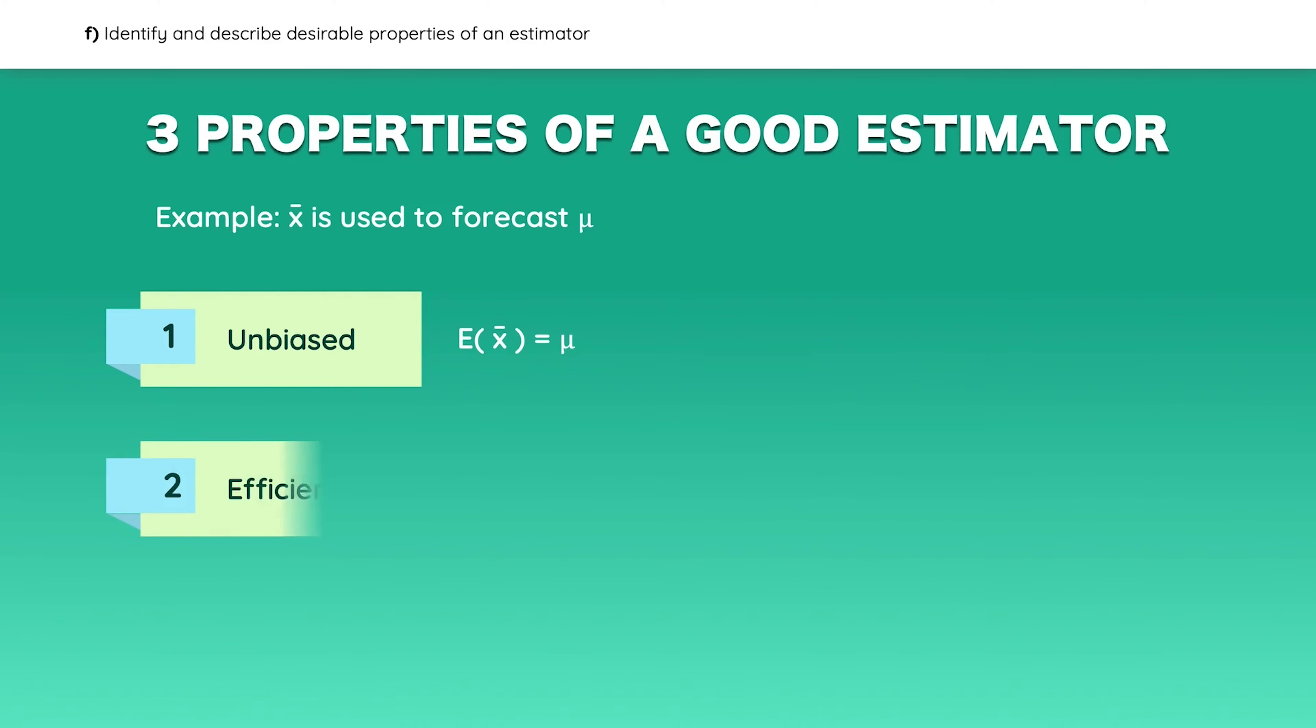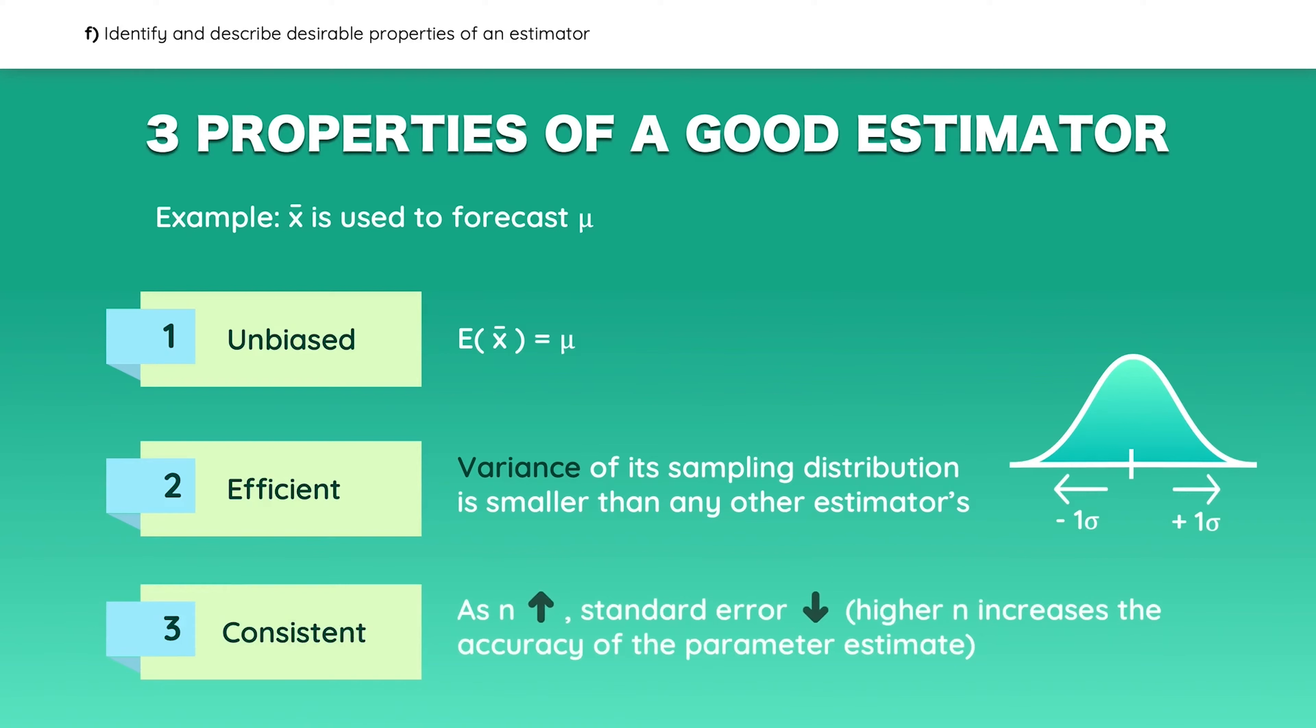It should also be efficient, which means that the variance of its sampling distribution is smaller than any other estimator's variance. And lastly, it should be consistent. This means that as your sample size increases, the standard error falls. In other words, as n increases, you can predict the population parameter with greater accuracy.